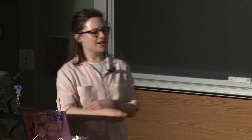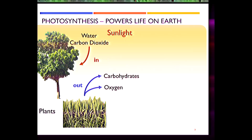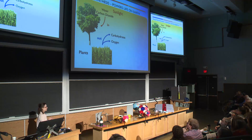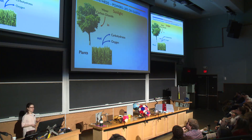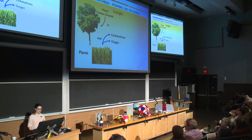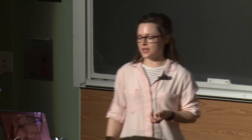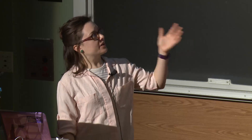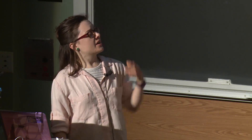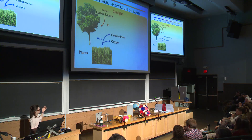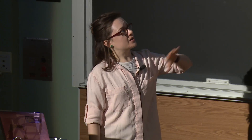So photosynthesis is a fairly familiar process. We know it as a series of chemical reactions where plants take carbon dioxide and water and use sunlight to create carbohydrates. So it's a conversion process of energy absorbed from the sun into a long-term chemical energy. Another byproduct of plant photosynthesis is oxygen. And we associate photosynthesis with the green color we see in plants.